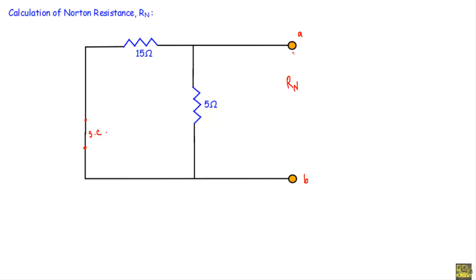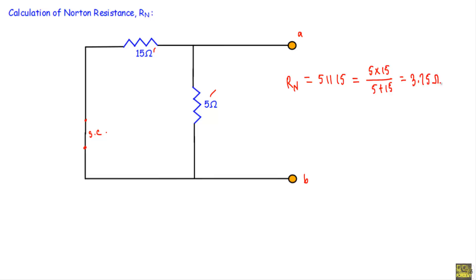The Norton resistance is the equivalent resistance of the circuit with respect to the A and B terminals. Here you will see that the 5-ohm and 15-ohm resistances are in parallel with respect to A and B terminals. Therefore R_n equals the parallel combination of 5 and 15, which is (5 × 15) / (5 + 15) = 3.75 ohms.